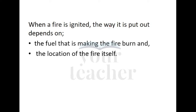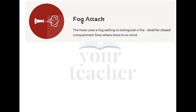For example, consider a case of a chemical industry where a process is running under the atmosphere of methane or natural gas. If a fire occurs accidentally, two factors determine how to extinguish it: the fuel driving the fire — in this case natural gas — and the area of the fire, which is the chemical industry where that process is happening.